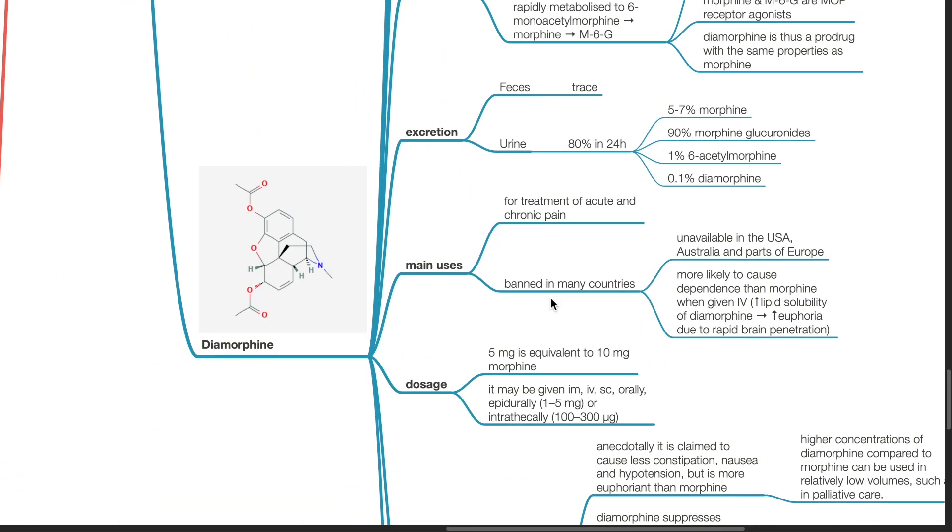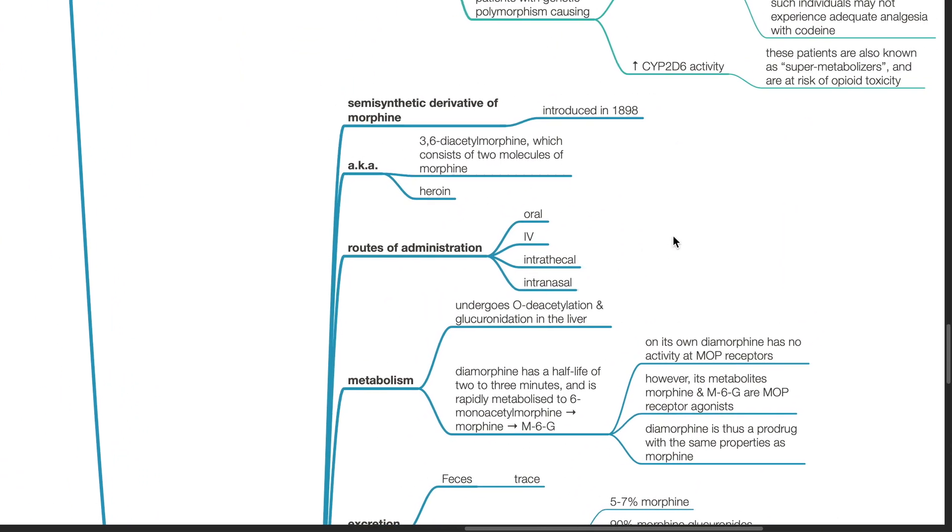Diamorphine. This is a semi-synthetic derivative of morphine introduced in 1898. It is also known as heroin or 3,6-diacetylmorphine which consists of two molecules of morphine.